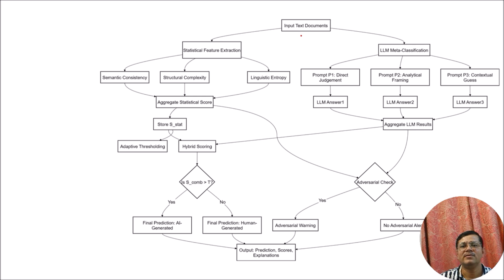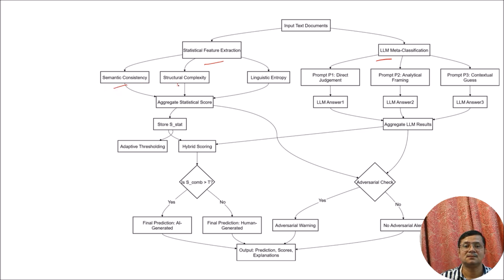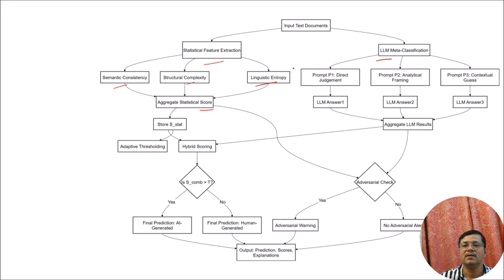First, we take the input text and apply structural feature extraction, then an LLM-based meta classification system. In structural feature extraction, we calculate: semantic consistency, structural complexity, and linguistic entropy for the text, and then calculate the aggregate statistical score. With that score, we also apply adaptive sorting before moving to LLM meta classification.